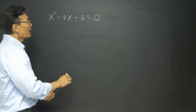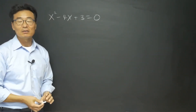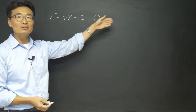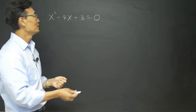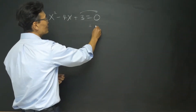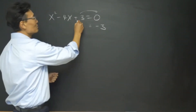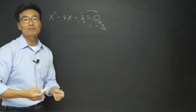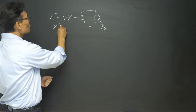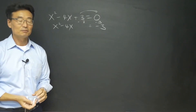First, everything with x, you want to leave it on the left side. Everything without the x, you want to bring it to the right side. So you bring the 3 over to the right side — it becomes negative 3, because you subtract 3 from both sides. And then we have x squared minus 4x left on the left side.